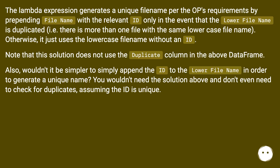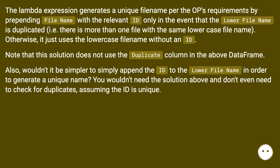Note that this solution does not use the duplicate column in the above data frame. Also, wouldn't it be simpler to simply append the ID to the lower filename in order to generate a unique name? You wouldn't need the solution above and don't even need to check for duplicates, assuming the ID is unique.